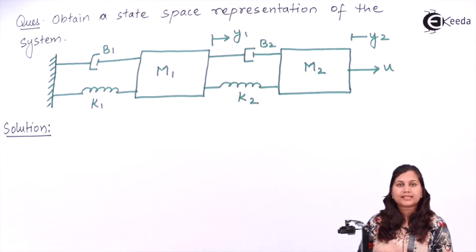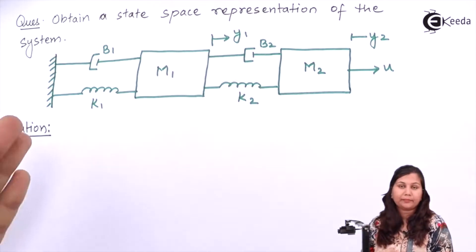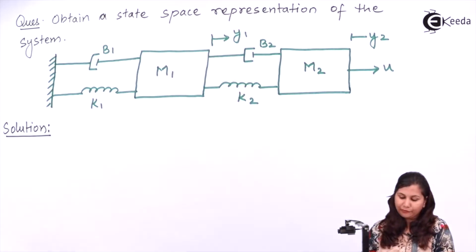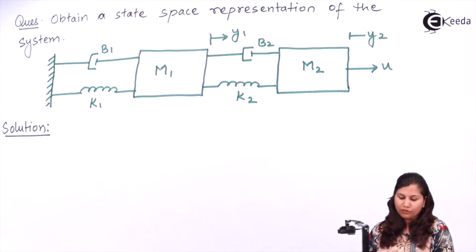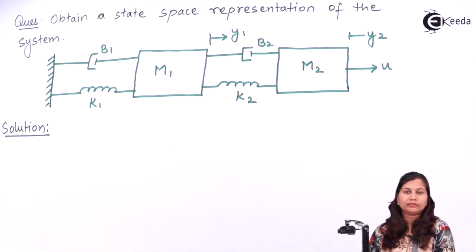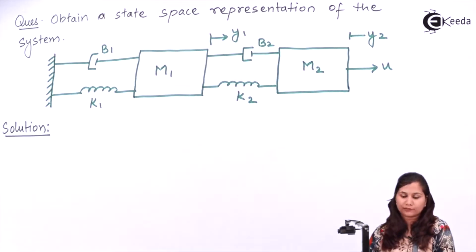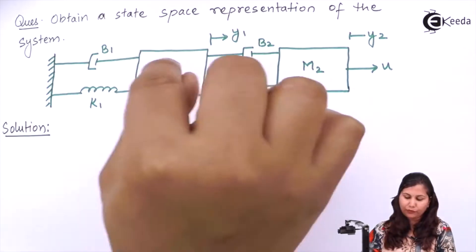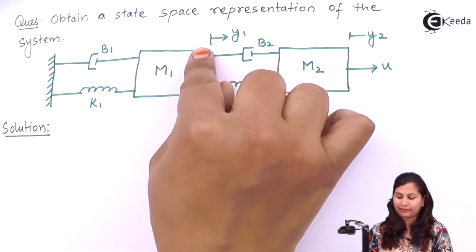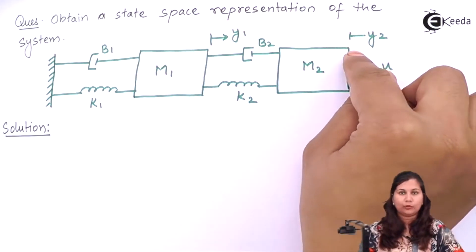For obtaining the state space representation for a mechanical system, we have to find out the mathematical model of the system. So for the mathematical model we will write the nodal equations for this system — specifically for nodes y1 and y2.